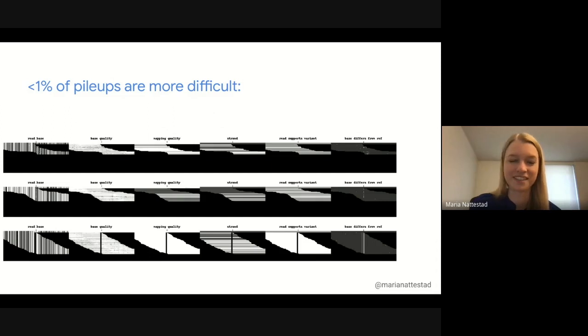Now, not all pileup images are this easy to classify. It's less than 1% of pileups that are more difficult, but this is still incredibly important to get right because it's within that less than 1% that all of our errors are in every variant caller. This is where DeepVariant starts to shine in trying to make distinctions for these more difficult cases.